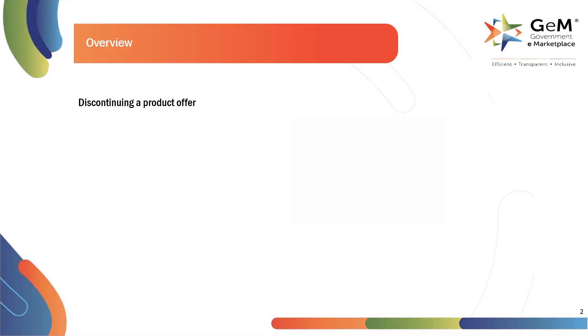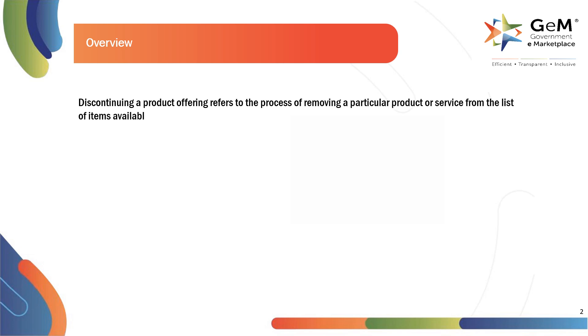Discontinuing a product offering refers to the process of removing a particular product or service from the list of items available for purchase on the GEM platform. There are primarily three cases covered under this feature.